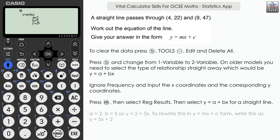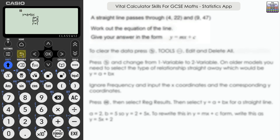Choose the top relationship, which represents the straight line y = a + bx, and press execute. We get a = 2, b = 5, and r = 1 — a perfect linear relationship. The coefficient of X is b = 5, and the constant is a = 2, giving y = 2 + 5x. Rearranging to y = mx + c form: y = 5x + 2.